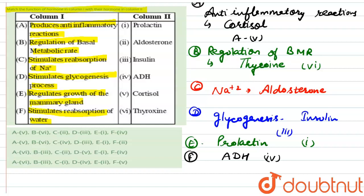Summarizing the final answers: A is fifth, B is sixth, C — aldosterone is the second number so C is second, D is third, E is first, and F is fourth. Therefore, the correct answer is option A. Hope this answers your question.